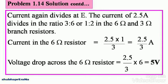Hence the voltage drop across the 6 ohm resistor is 2.5 divided by 3 times 6, that is the current into the resistance value, which gives you 5 volts. This is the second portion of the problem where you had to calculate the voltage drop across the 6 ohm resistor.